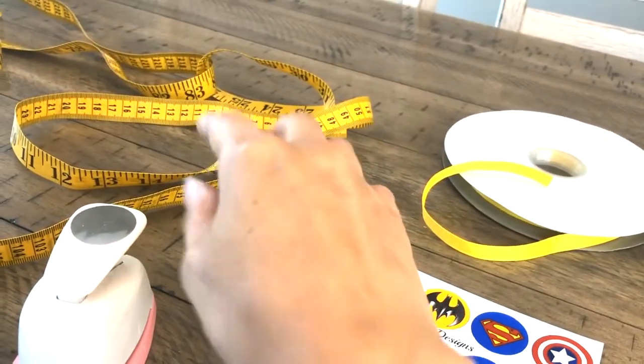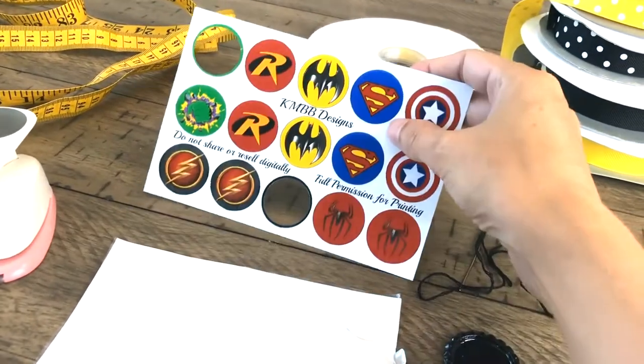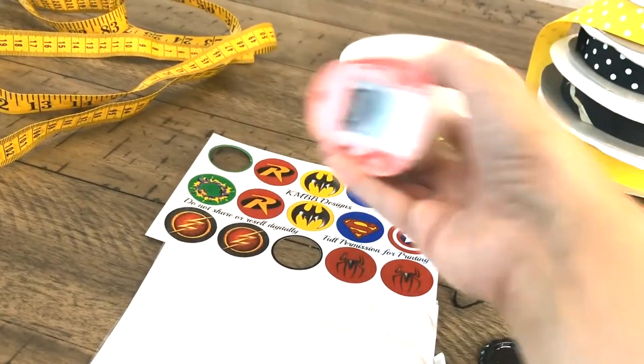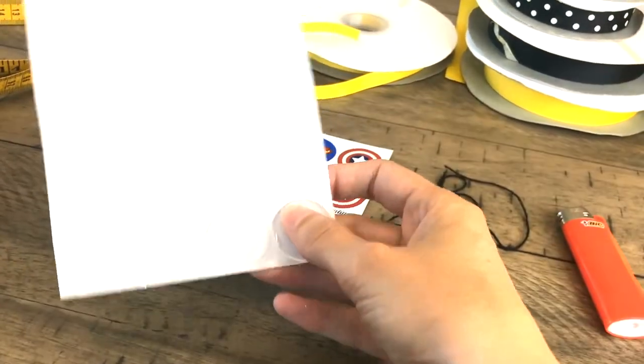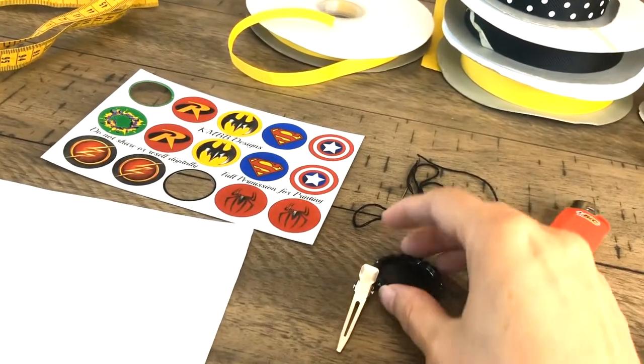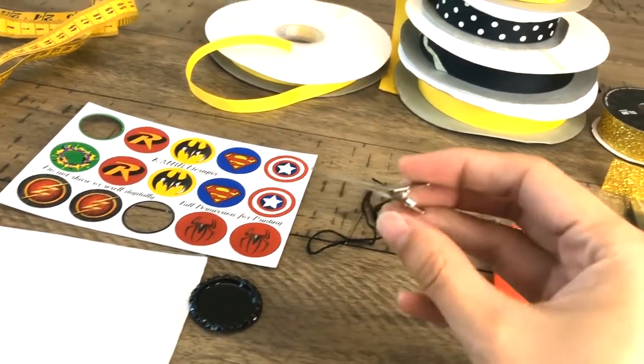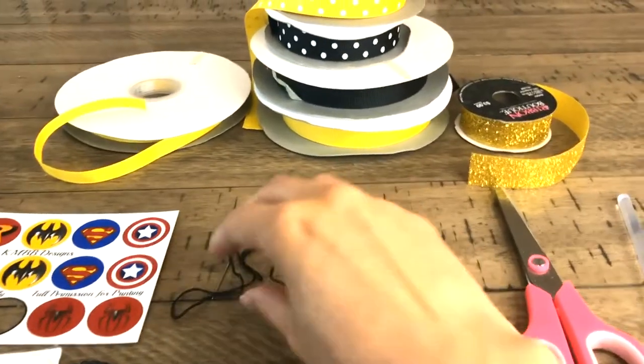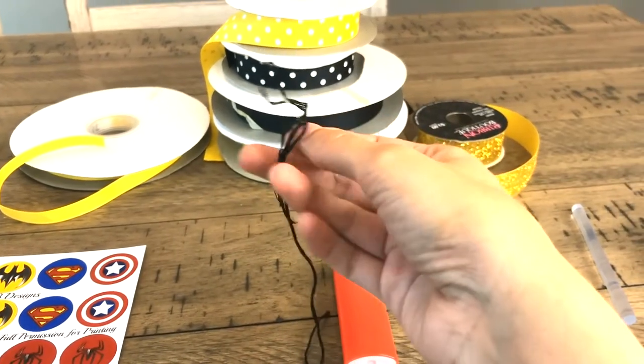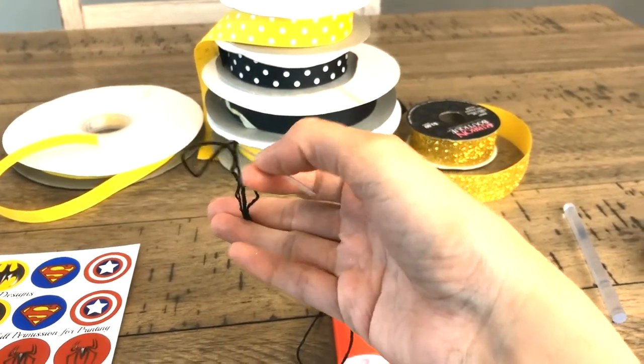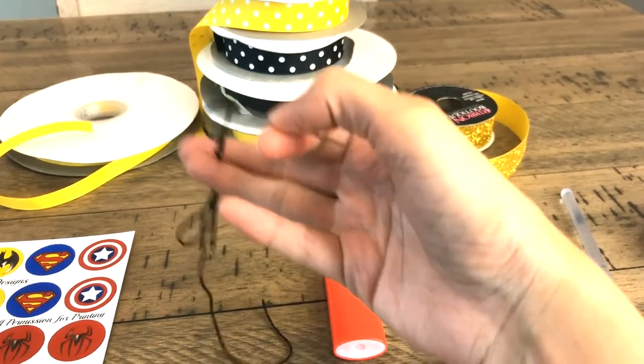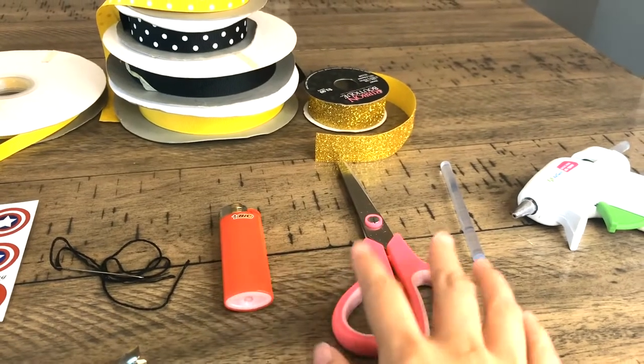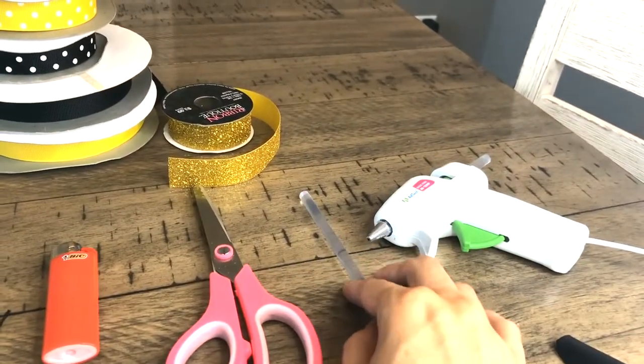I have measuring tape, bottle cap images, a round hole punch to punch out the bottle cap images, epoxy stickers, a bottle cap, an alligator clip that will clip the bow into hair, needle and thread. For my thread I like to use embroidery floss when I make my boutique hair bows just because I like the thickness. I've got a lighter, scissors, and a glue gun and glue stick.